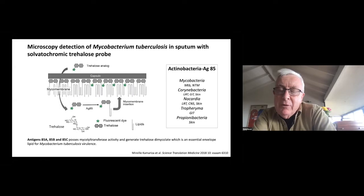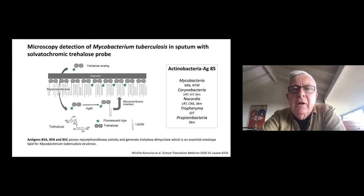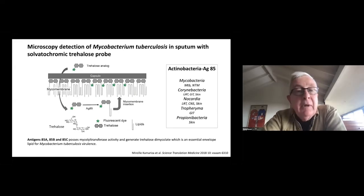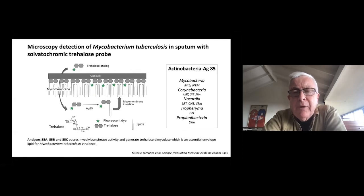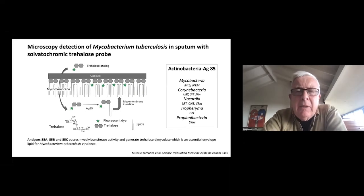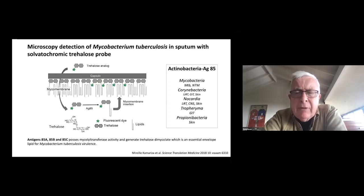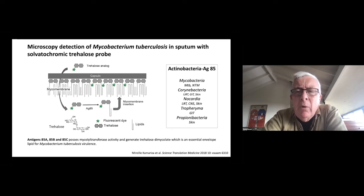Now I'm going to talk about the microscopic detection of TB. This is based on a paper published from the Stanford group about four years ago. They developed a Trelose sugar probe which was taken up by organisms and processed by something called the antigen 85 complex, and mycolated Trelose is then incorporated into the growing TB organism membrane. Antigen 85 has some specificity to the actinobacteria — a fairly broad grouping that includes mycobacteria, non-TB mycobacteria, corynebacteria, and also nocardia, which is relatively rare.